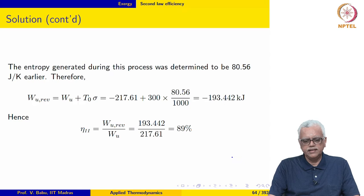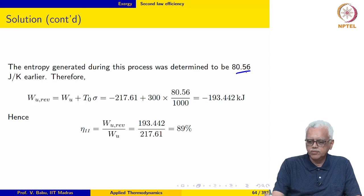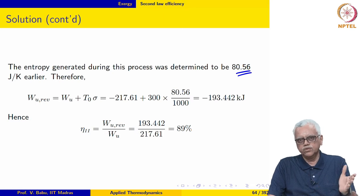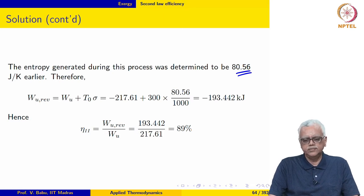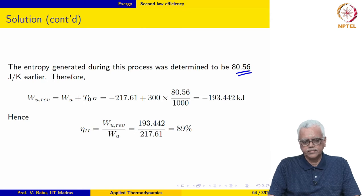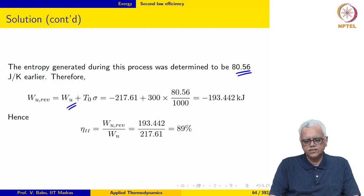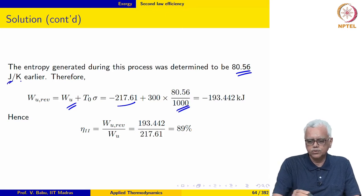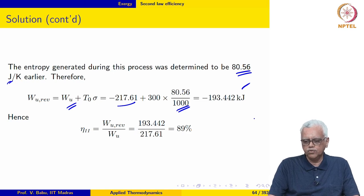The entropy generated during this process was determined to be plus 80.56 joule per Kelvin — this was also worked out in the module on entropy in the previous course. W_u reversible in this case comes out to be minus 217.61 plus 300 times sigma, where the factor of 1000 is used to convert joules to kilojoules. This comes out to be minus 193.442 kilojoules.